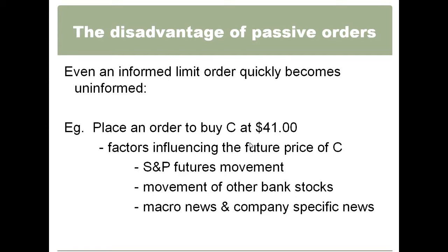If the S&P futures start ticking down, they will back their bid off on Citigroup from 41 to, say, 40.95 to reflect the new information of the market being a couple of points lower. If the market starts to move back up, they'll move the price back up. These are almost called envelope orders — orders that are surrounding where the fair value for the security is currently deemed. What you see now is that the stability of the quote itself is a lot less than it was with traditional participants, because a human being can't physically adjust their order a hundred or a thousand times a second. High-frequency traders can.